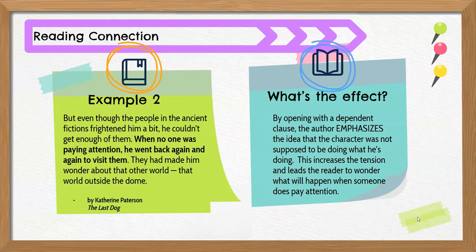Let's look at another example from The Last Dog by Katherine Patterson. But even though the people in the ancient fictions frightened him a bit, he couldn't get enough of them. When no one was paying attention, he went back again and again to visit them. They had made him wonder about that other world — that world outside the dome. By opening with a dependent clause, the author emphasizes the idea that the character was not supposed to be doing what he's doing. It says when no one was paying attention — this increases tension and leads the reader to wonder what will happen when someone does pay attention.